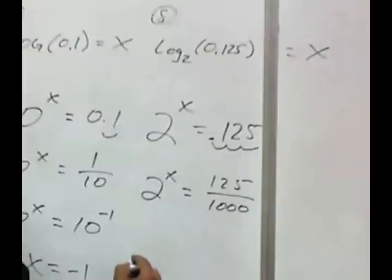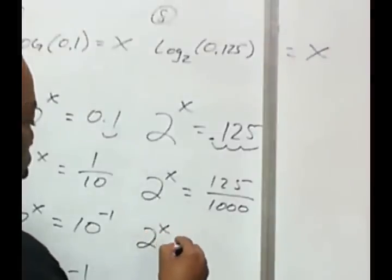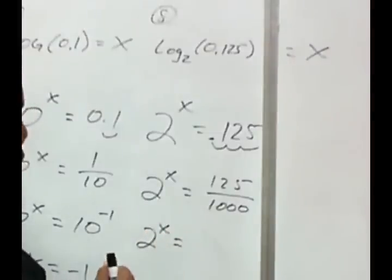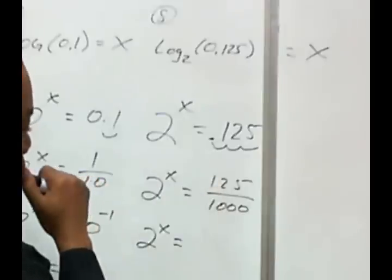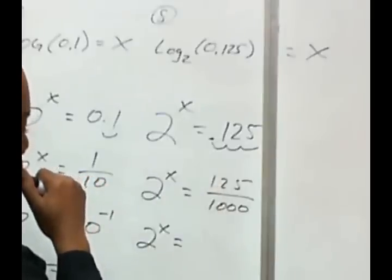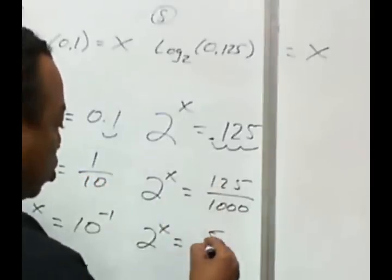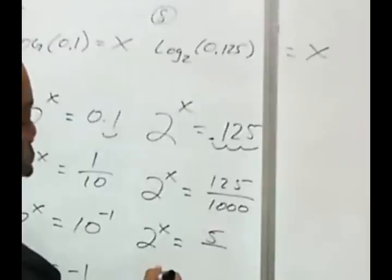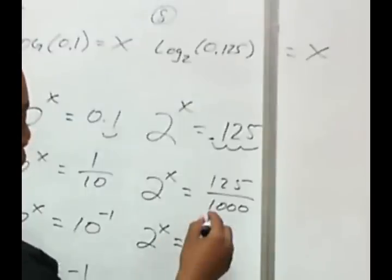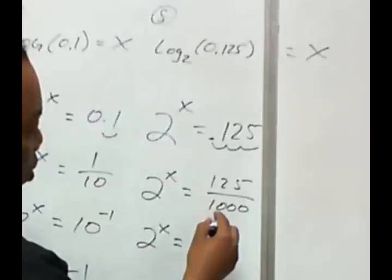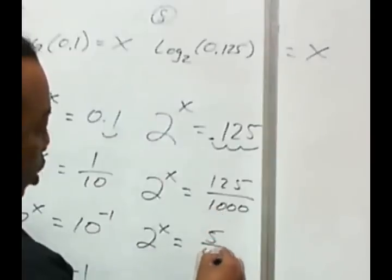Okay. Now, let's reduce this, or simplify this by 25. 25 goes into the numerator, let's see here, 5 times. And, 25 would go into the denominator, let's see, 40 times.